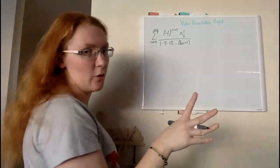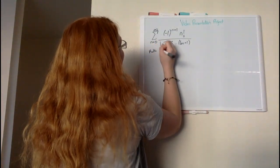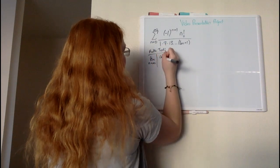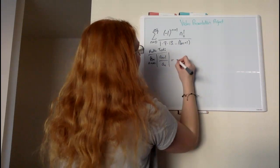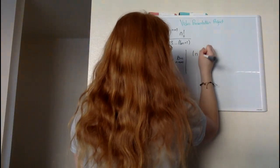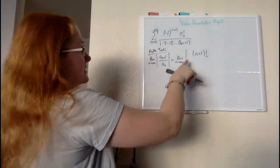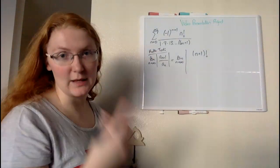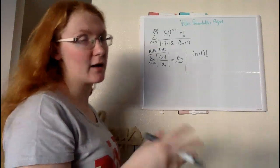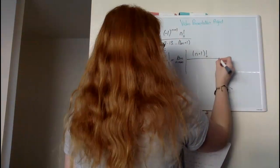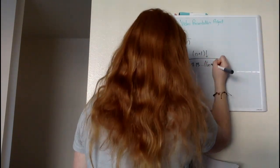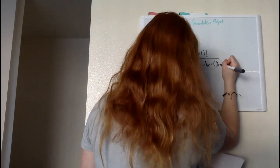Immediately we have our factorial up here, so we're going to want to do our ratio test. We have m plus 1 factorial up top. Since we have absolute value, we can go ahead and get rid of our alternating term, because ultimately that negative is not going to stick around when we have our absolute value, so I eliminate it right off the bat. Now we're going to divide by 1 times 7 times 13 continuing, and what we have is n plus 1 times 6n plus 7, because we're moving on to our next term.